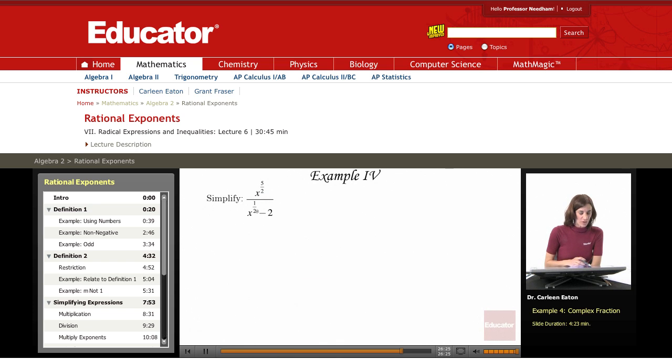We have x to the 5 halves over x to the 1 half minus 2. Now, recall what x to the 1 half is. It's actually just the square root of x.